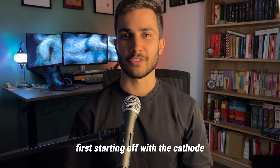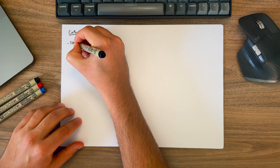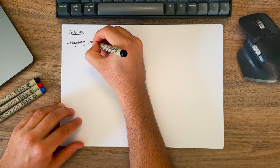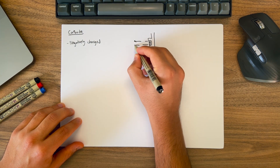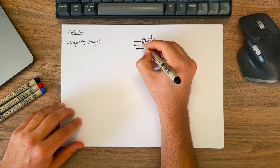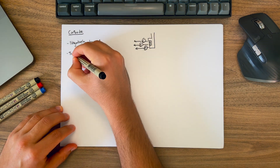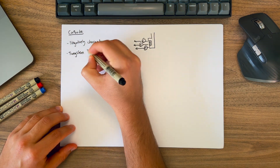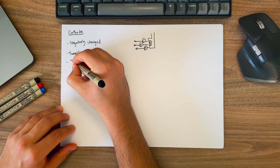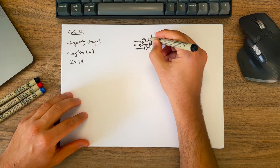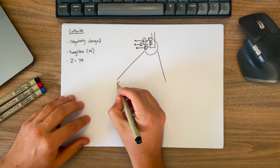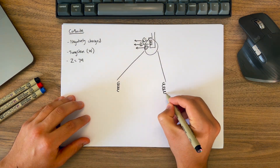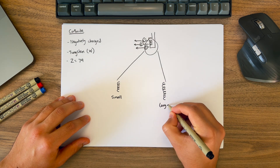Starting off with the cathode. The cathode is the negatively charged electrode and it's the source of electrons within the x-ray tube. It's usually made of a material called tungsten, which is a metal with a symbol W and an atomic number of 74. And at the tip of the cathode is where you find the two filaments — the small filament and the large filament.